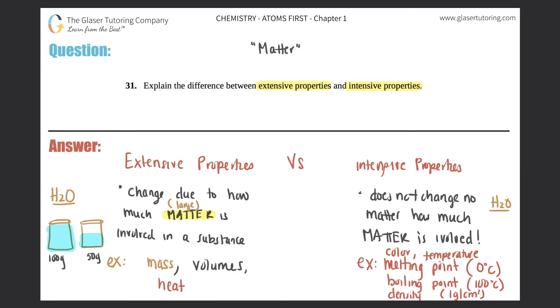So remember these three: mass, volume, and heat energy is extensive properties. Color, what water looks like, or what any substance looks like, the temperature that it can be, melting point, boiling point, and density. These are all intensive properties. They do not change no matter how much matter is involved, no matter if it's a large amount or a small amount. So those are the differences.